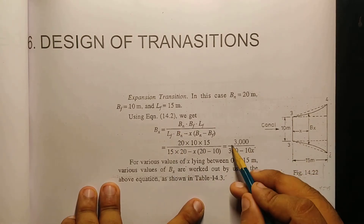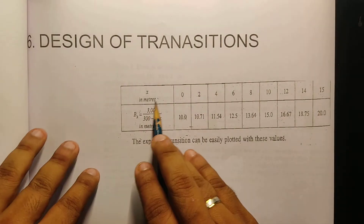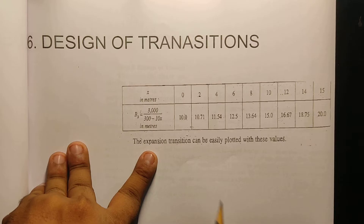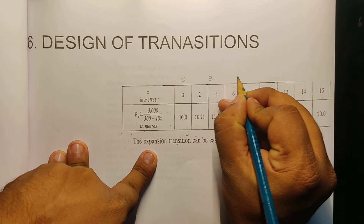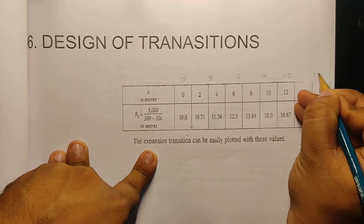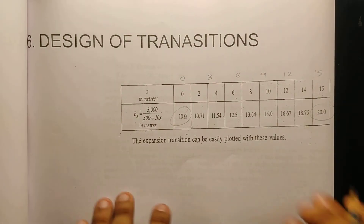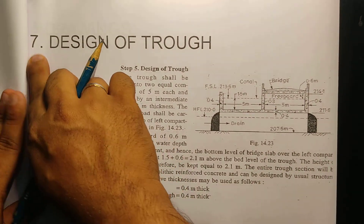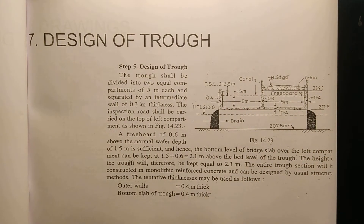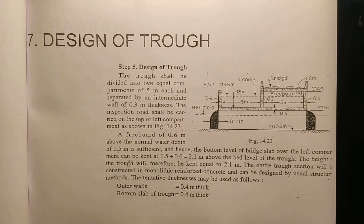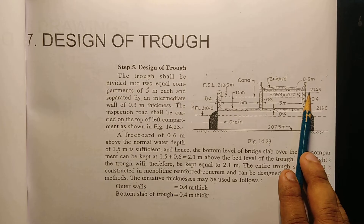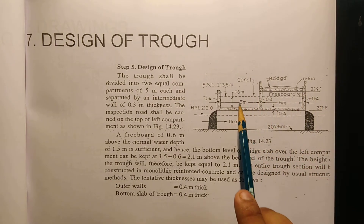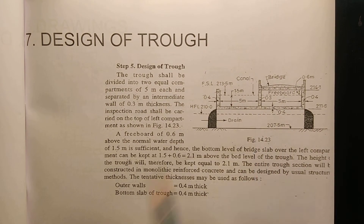We have to use this formula and plot the final equation. We have to plot the values for x: 0, 3, 6, 9, 12, 15. This is the second step — we have to plot the transition and design the cross-section of the trough. One compartment is 5 meters wide, the wall is 1.3 meters, and the exterior wall is 1.4 meters.